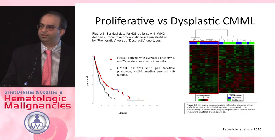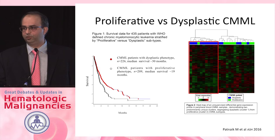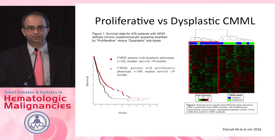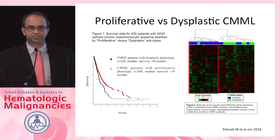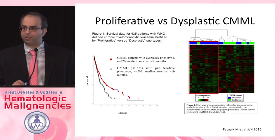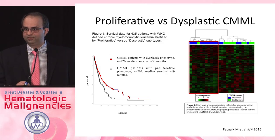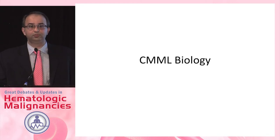An age-old question is why this disease has manifestations overlapping between dysplasias and proliferative neoplasms, and whether that is clinically relevant. This is where a lot of our research at the Mayo Clinic is currently focused. In our dataset of 435 patients, those with proliferative CMML had inferior survival compared to those with dysplastic CMML. Based on RNA sequencing and other work, there appears to be unique biology segregating these subtypes — clearly a different clinical phenotype with biological uniqueness.